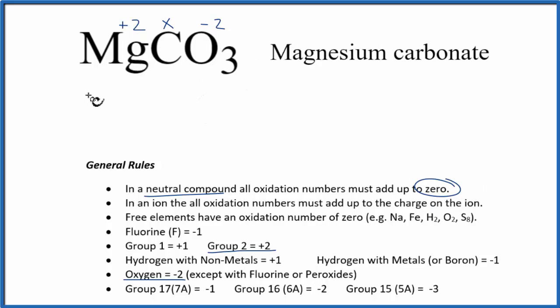With this information and the fact that this will all add up to zero, we can write an equation. We could say +2 + x (that's the carbon we're trying to find) + we have three oxygen atoms, each one has -2 as its oxidation number. So 3 times -2, that's -6. All of that equals zero.